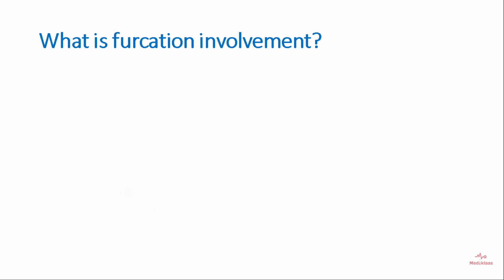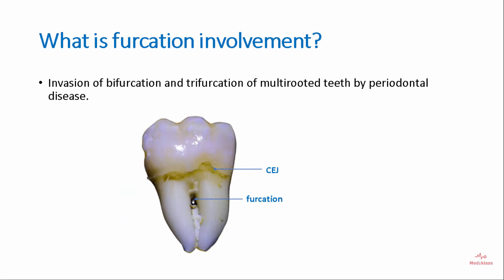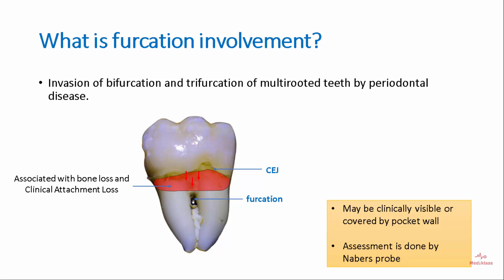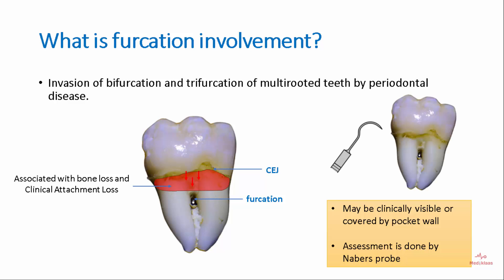Furcation involvement is the invasion of bifurcation and trifurcation of multi-rooted teeth by periodontal disease. It is associated with bone loss and clinical attachment loss. It may be clinically visible or covered by the pocket wall. Furcation involvement can be assessed by using a Nabers probe.